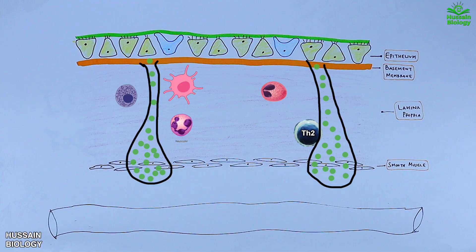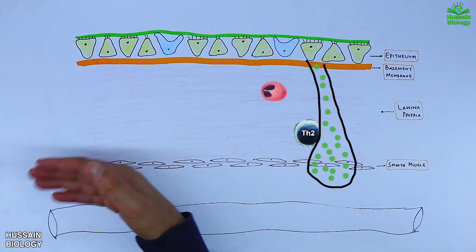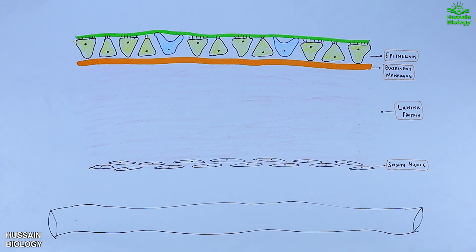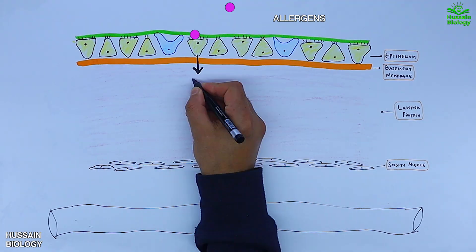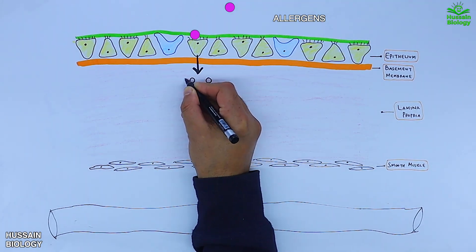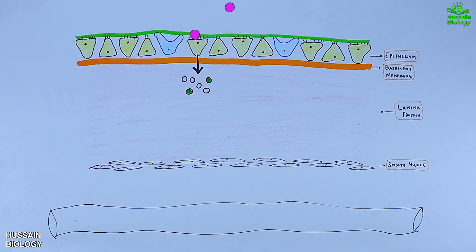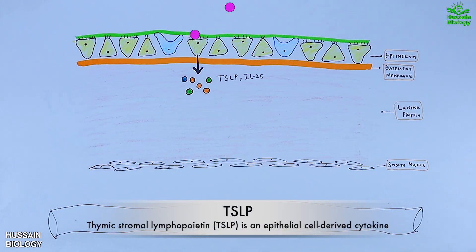To start the triggering pathway of asthma, we have allergens present on the epithelium membrane as shown in the diagram. They come in and bind with the epithelial cells.